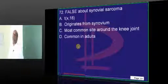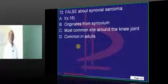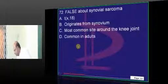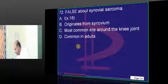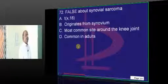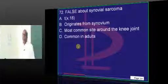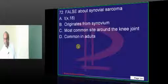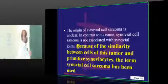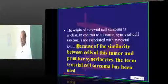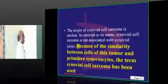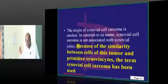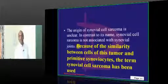Synovial sarcoma — what is the misnomer and from where does it originate? It is not from synovial tissue. The reason it is called synovial sarcoma is that histologically the cells look like synovial cells — they resemble primitive synoviocytes in appearance, but they do not actually originate from synovium.